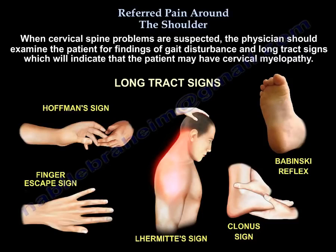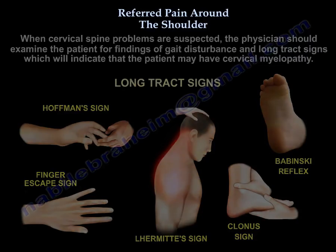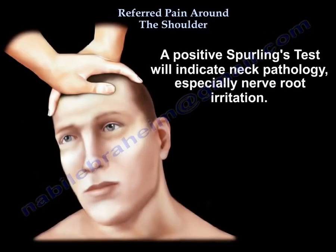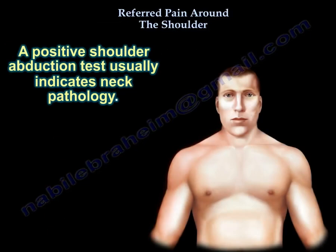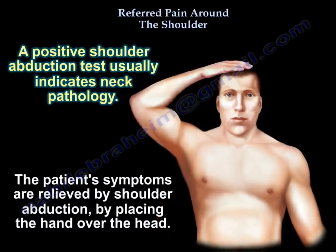This is a summary of some long-track signs. A positive Spurling's test will indicate neck pathology, especially nerve root irritation. A positive shoulder abduction test usually indicates neck pathology — the patient's symptoms are relieved by shoulder abduction, by placing the hand over the head.